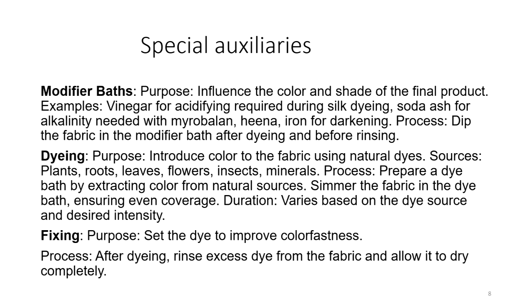Special auxiliaries include the modifier bath. The purpose is to influence the color and shade of the final product. Examples include vinegar for acidifying, which is required during silk dyeing; soda ash for alkalinity, needed for myrobalan and henna; and iron for darkening. These auxiliaries are dipped into after dyeing and before rinsing — so they are used after dyeing.